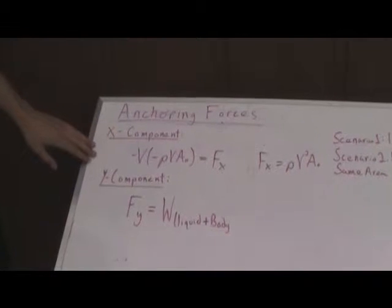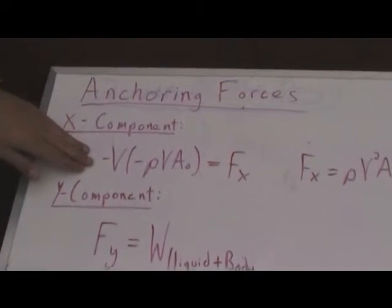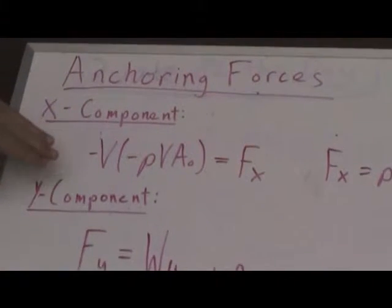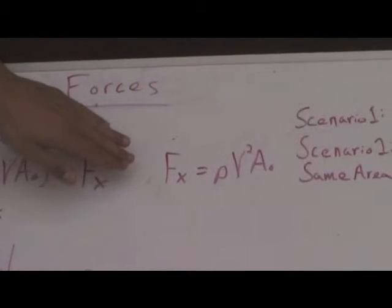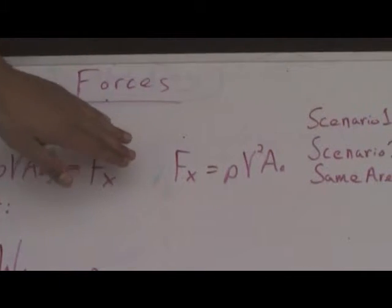In the x component, we find that the velocity of the flow is going in the negative x direction and is going into the control volume, leading that to be negative, leading the anchoring force needed in the x direction to be ρv²A.